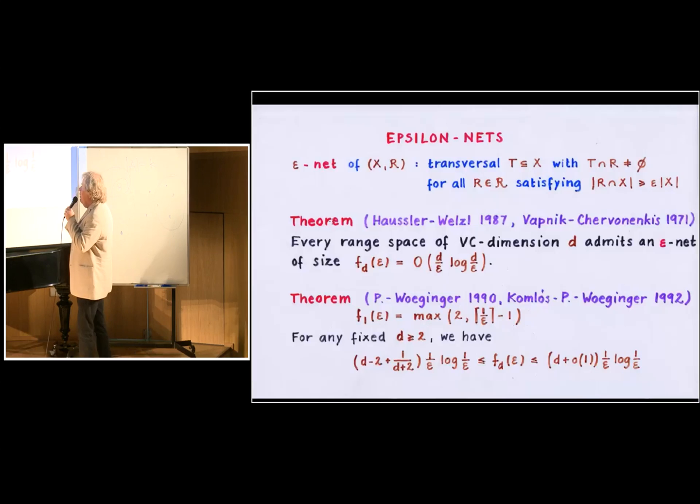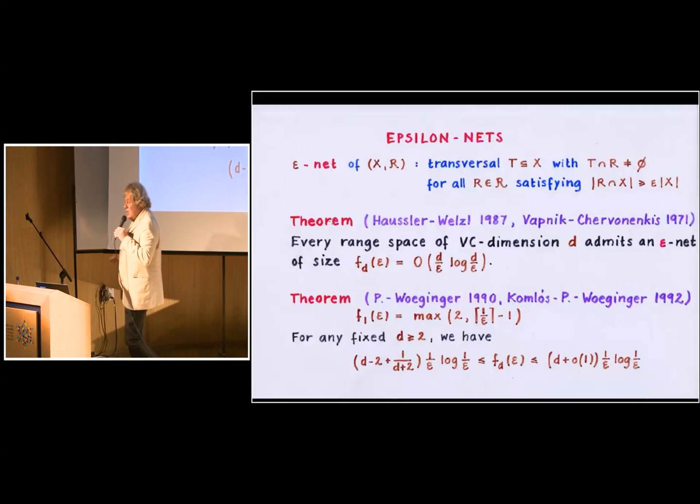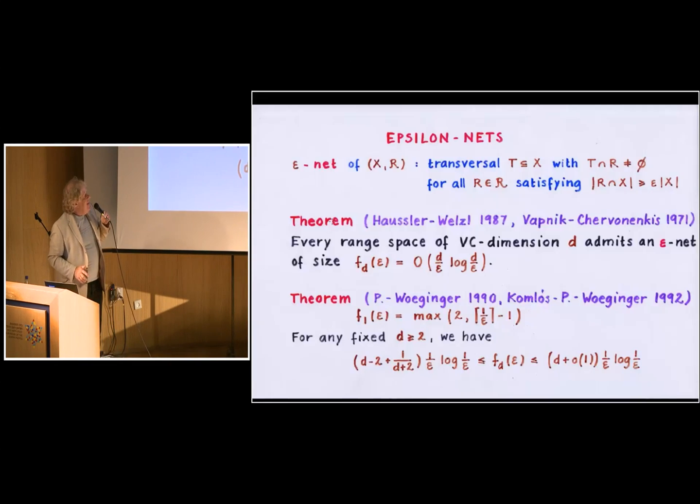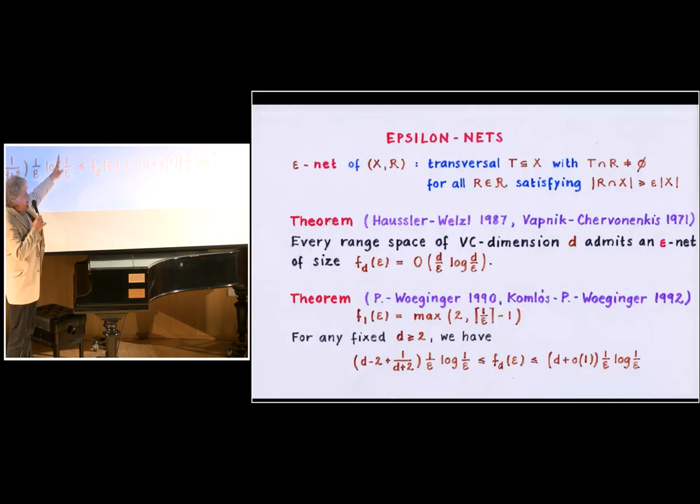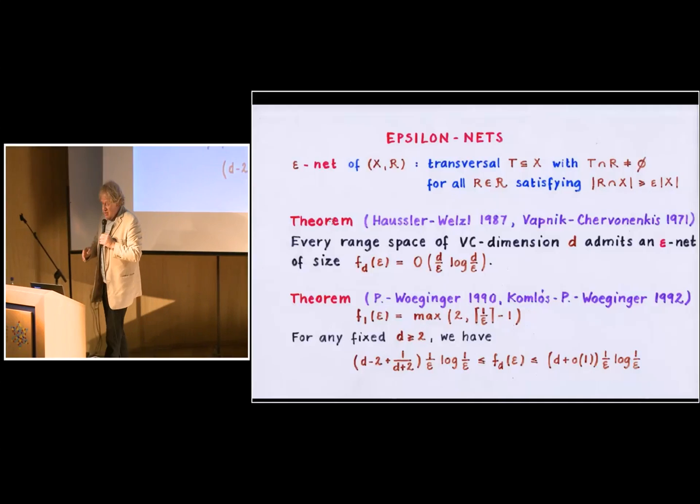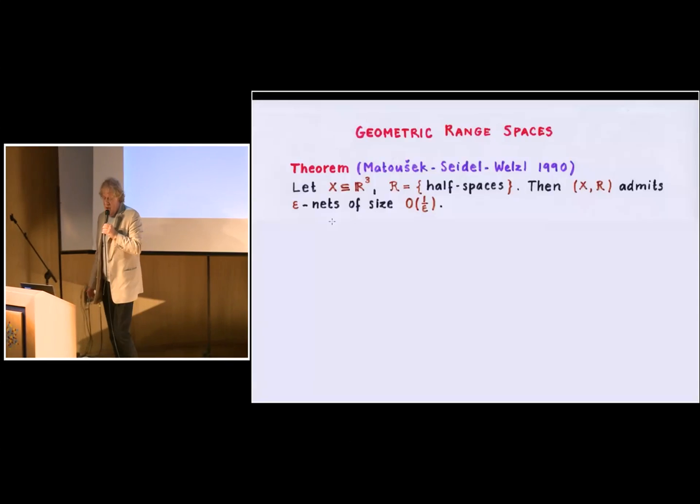And Haussler and Welzl asked that, and shortly after, together with Gerhard Woeginger, and then in a slightly more general form, precise form, with, together with Janusz Komlós, we found that not only you need this logarithmic overhead, but we could also essentially determine the best constant that you can have in this theorem, which is roughly D. Now, not surprisingly, in this theorem, we use the probabilistic method for the construction, which in some sense can be considered cheating, because we want to apply our results in geometric setting, and geometrically defined hypergraphs are anything but sort of random.